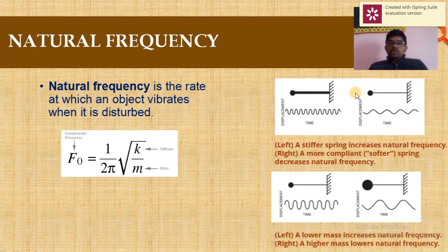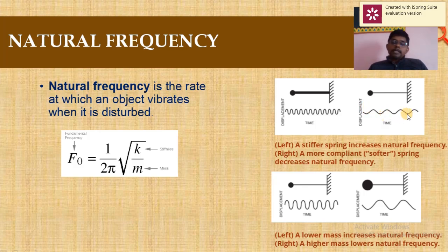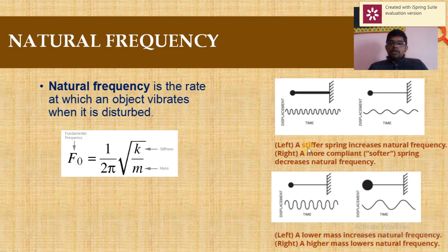Comparing two diagrams: the first has denser coils than the second. Due to higher density (higher stiffness), the number of cycles formed in the first diagram is very high. In the second diagram, the frequency value fluctuates — increasing and decreasing without maintaining a constant level. Therefore, a stiffer spring increases the natural frequency and a less stiff (softer) spring decreases the natural frequency.